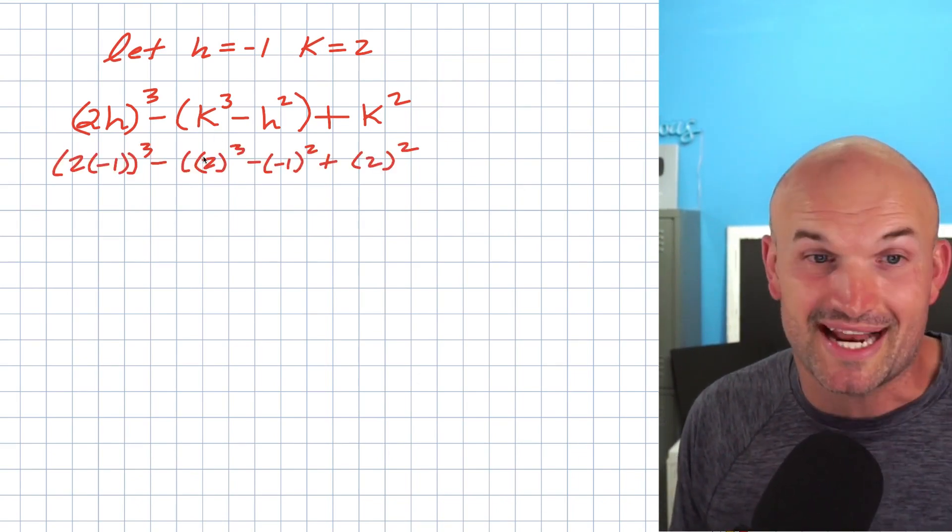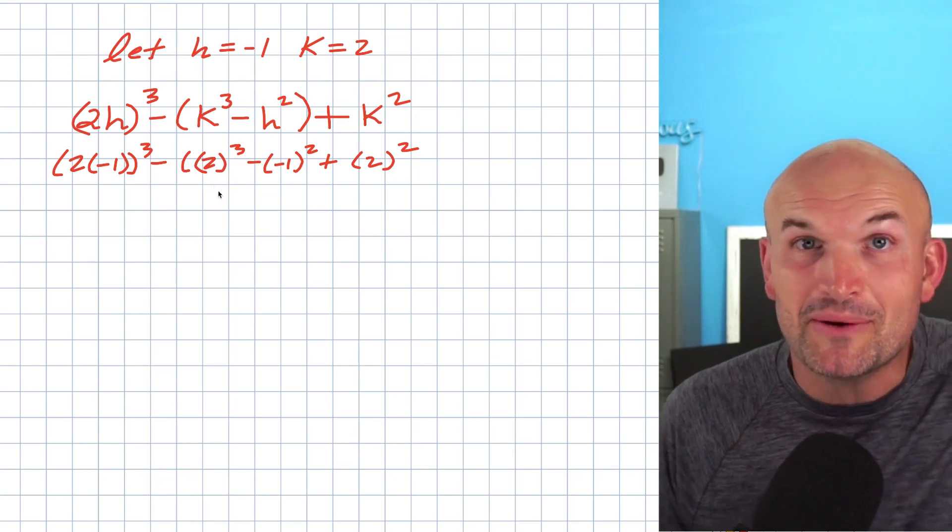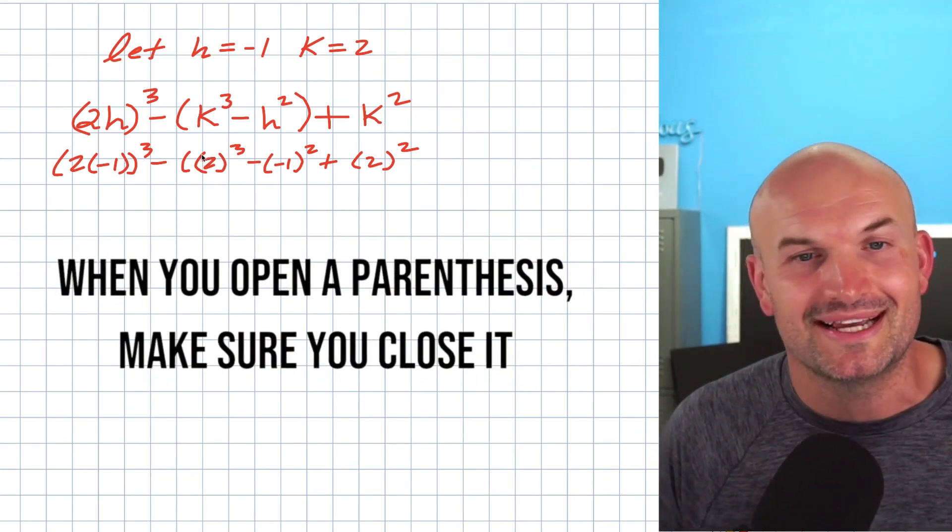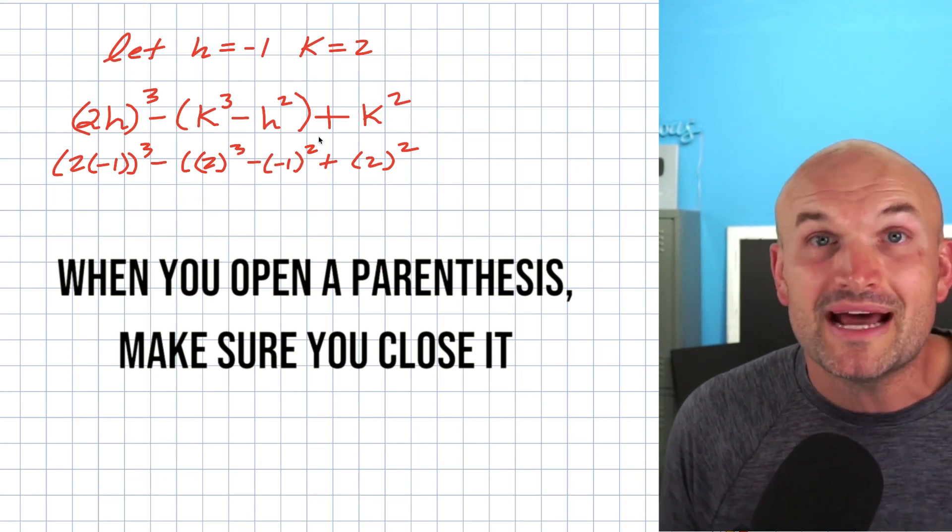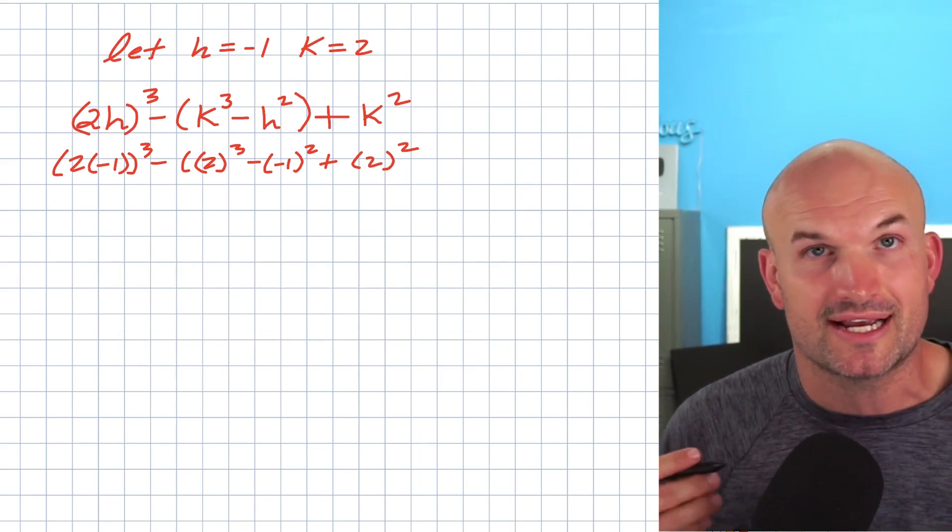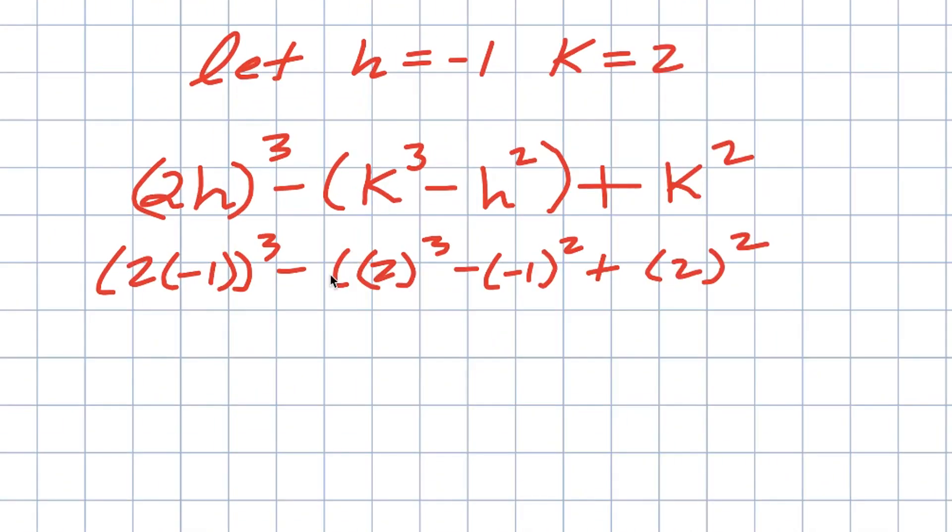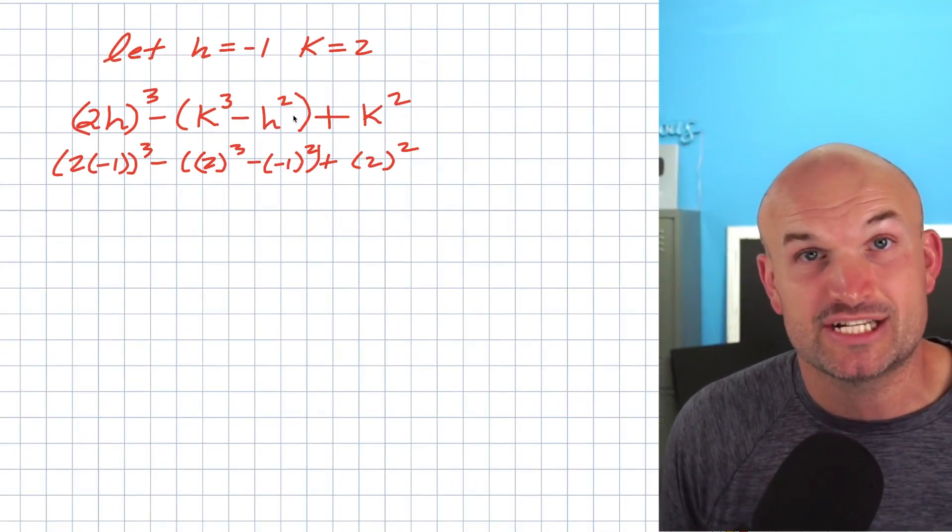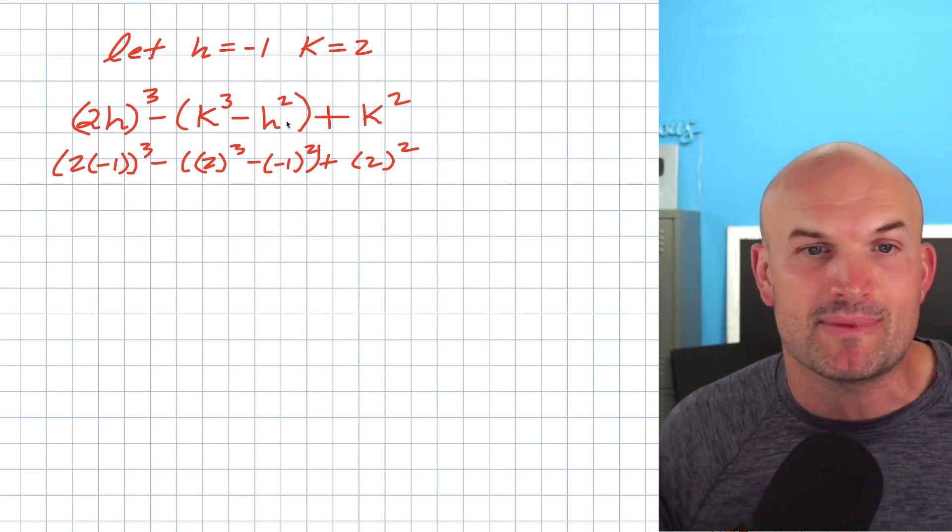Another tip to follow - and this is a small mistake I just noticed I made - whenever you open a parentheses, you got to make sure you close it. If you've done any coding, whenever you open a parenthesis, you got to make sure you close it. As I'm looking back on this problem to make sure I wrote it down correctly, I noticed I have an open parentheses here but I didn't have a closed parentheses. That's the whole purpose of grouping symbols - we're grouping this K cubed minus h squared. So we got to make sure those parentheses remain intact.